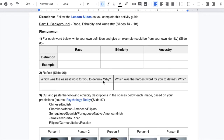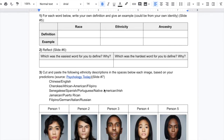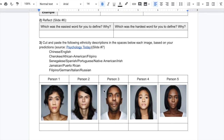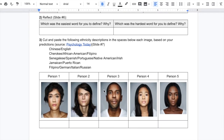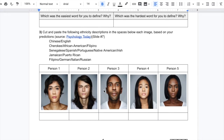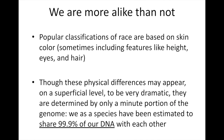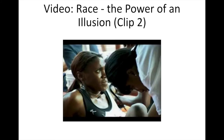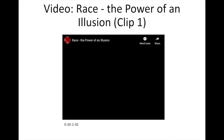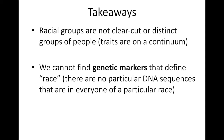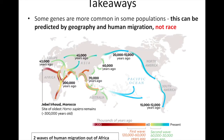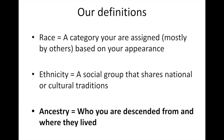Here, after considering race, ethnicity, and ancestry, students do an activity that often reveals how assigning race and ancestry is not often as straightforward as it may seem. Next, students consider some data related to genetics, and watch short videos from the PBS series Race: The Power of Illusion, before recording some important takeaways from scientific evidence related to race and ancestry.